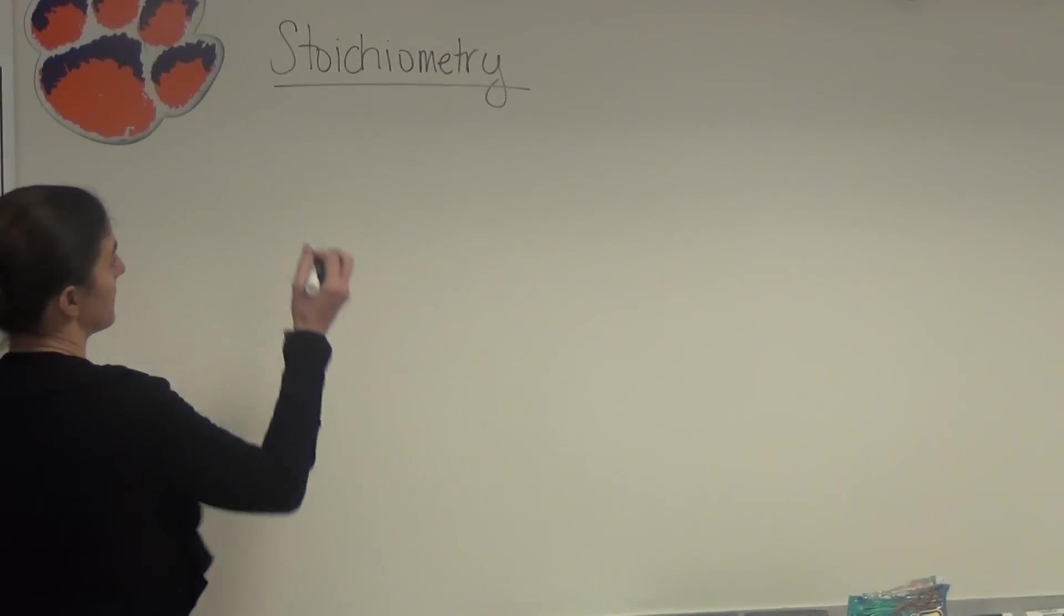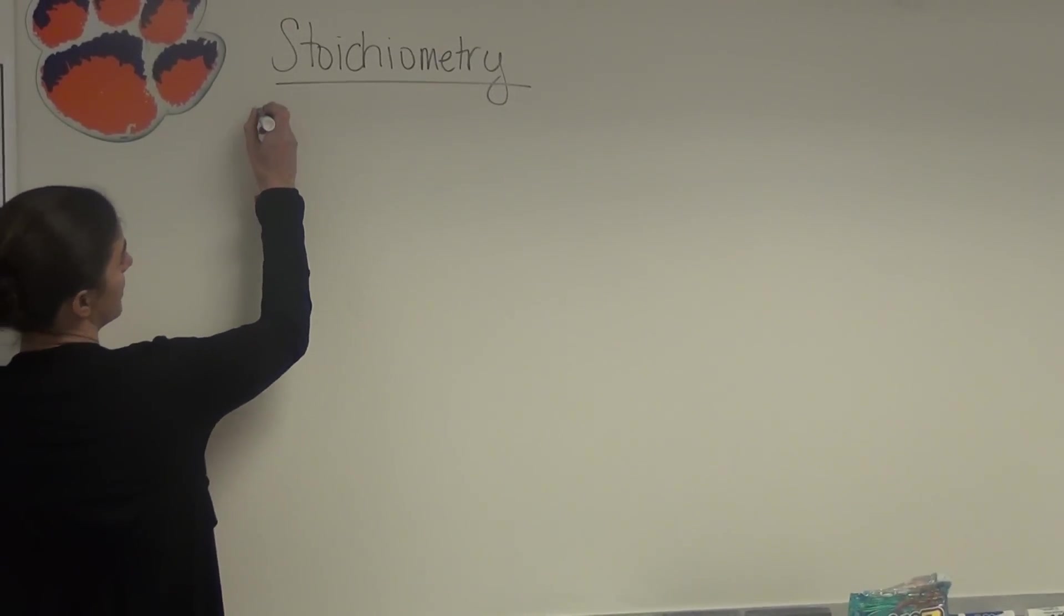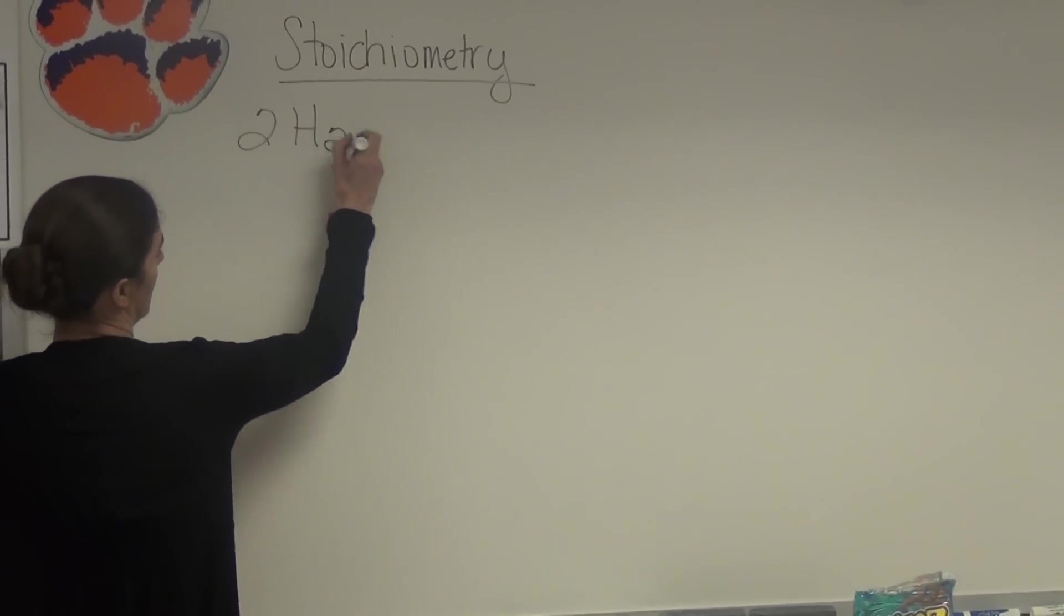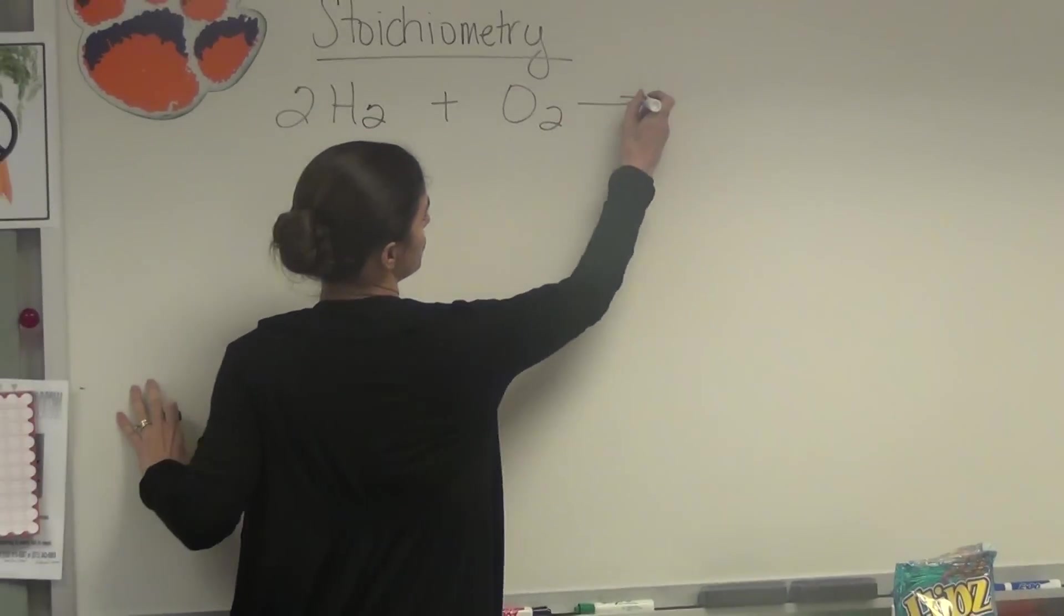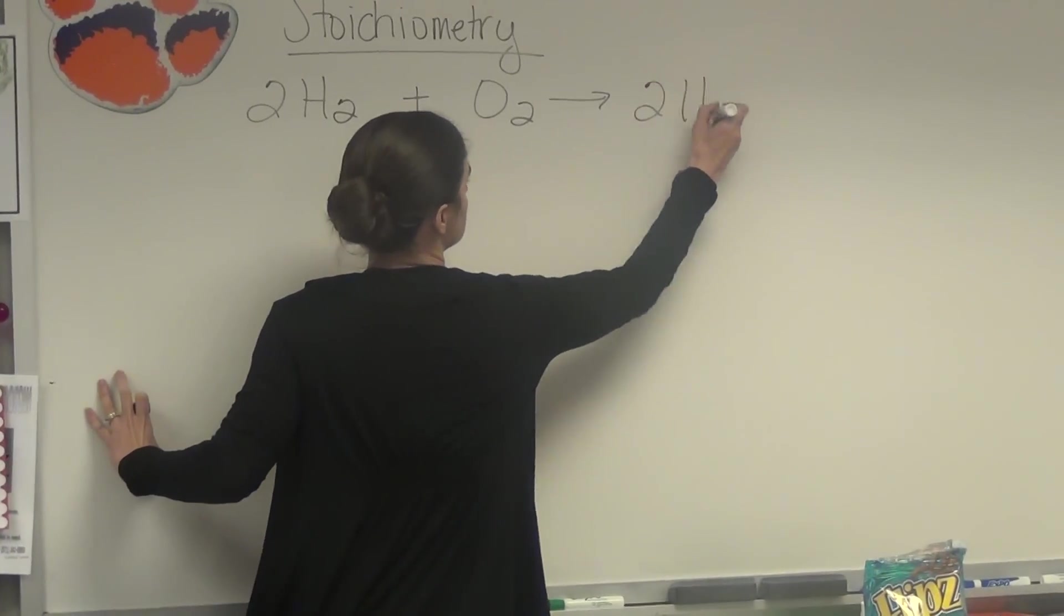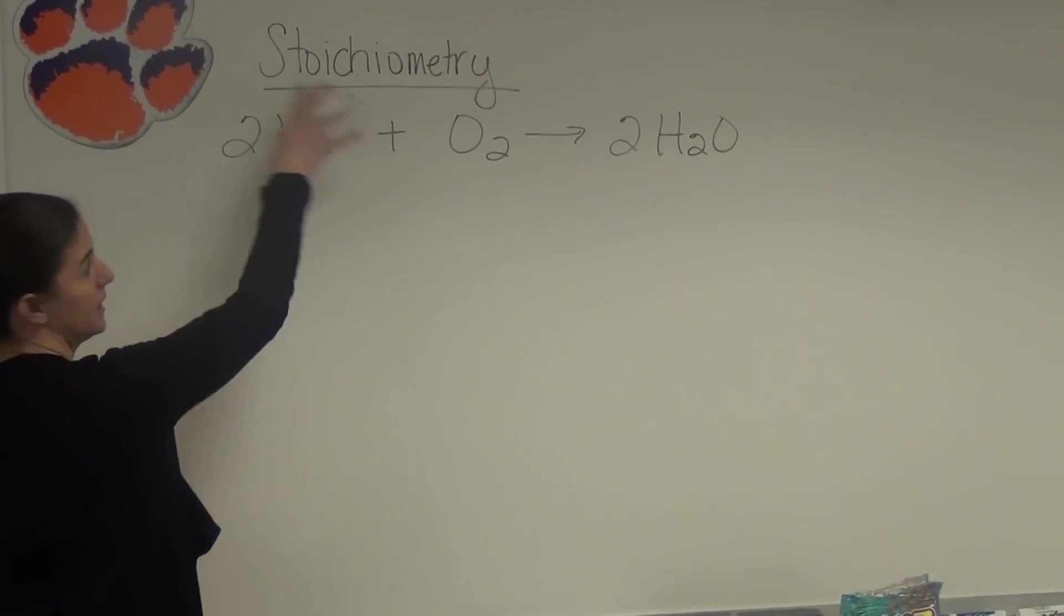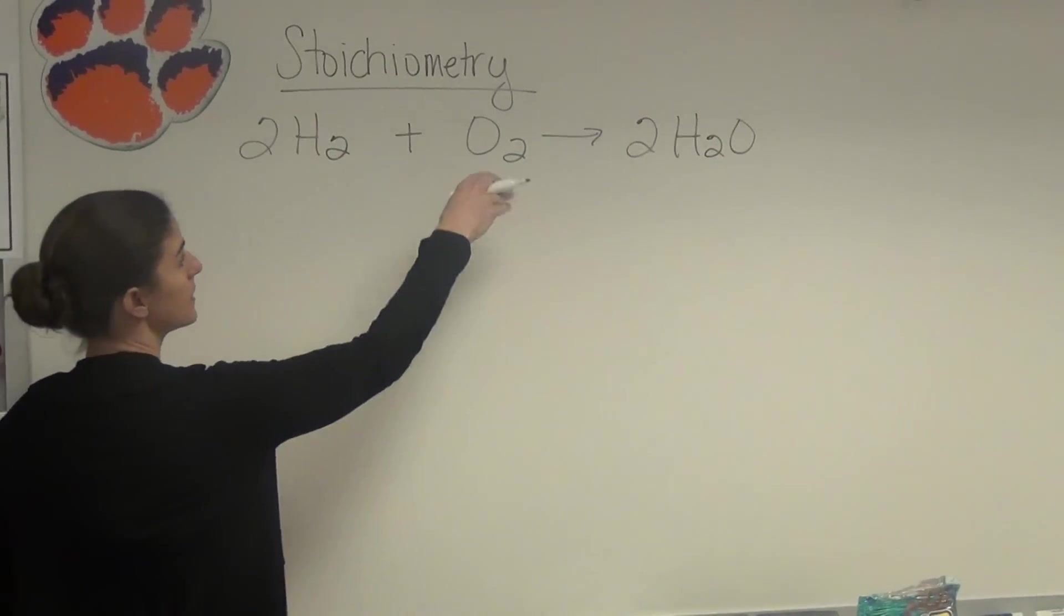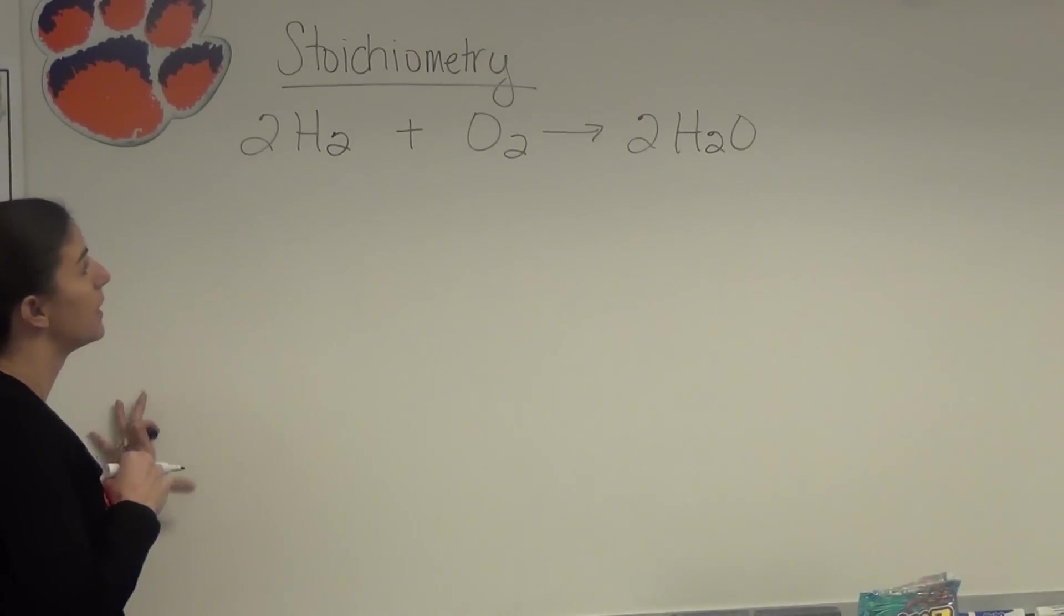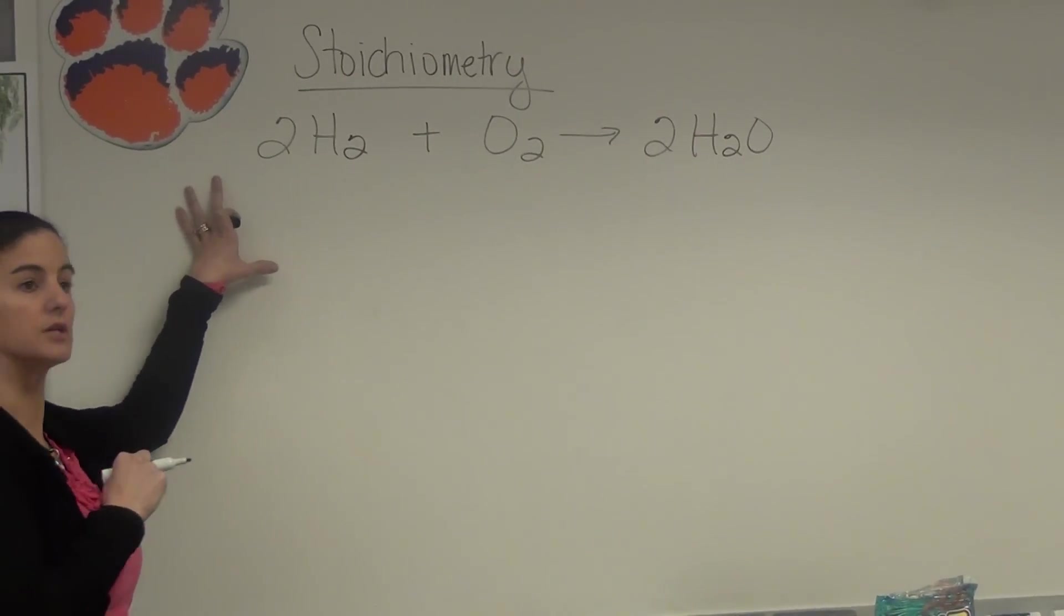For example, if we are going from H2 plus O2 to produce water, we can look at the relationship between hydrogen gas and oxygen gas. But first, we have to have our balanced equation.